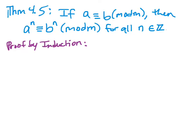This video is a continuation of section 4.1. We have a few more important theorems to talk about, as well as some more work we can do with solving to find least residues with exponents. So let's pick up with Theorem 4.5. In your book this is page 220. This theorem states that if a is congruent to b mod m, then a to the power of n is congruent to b to the power of n mod m for all natural numbers n.